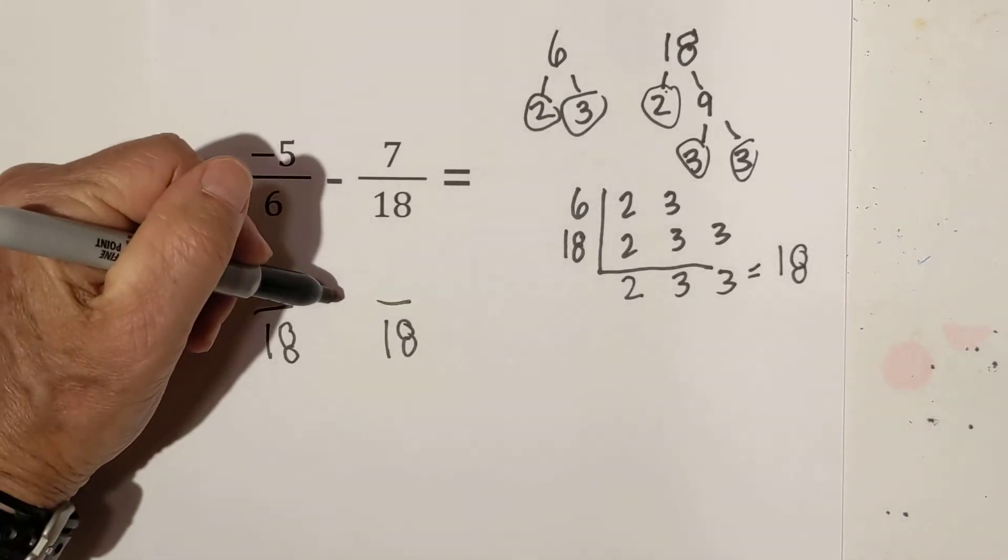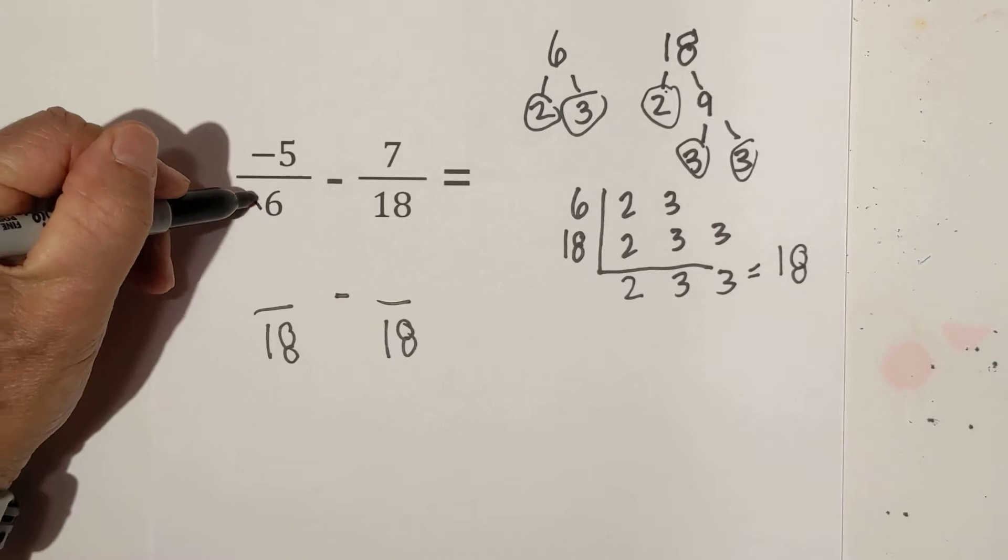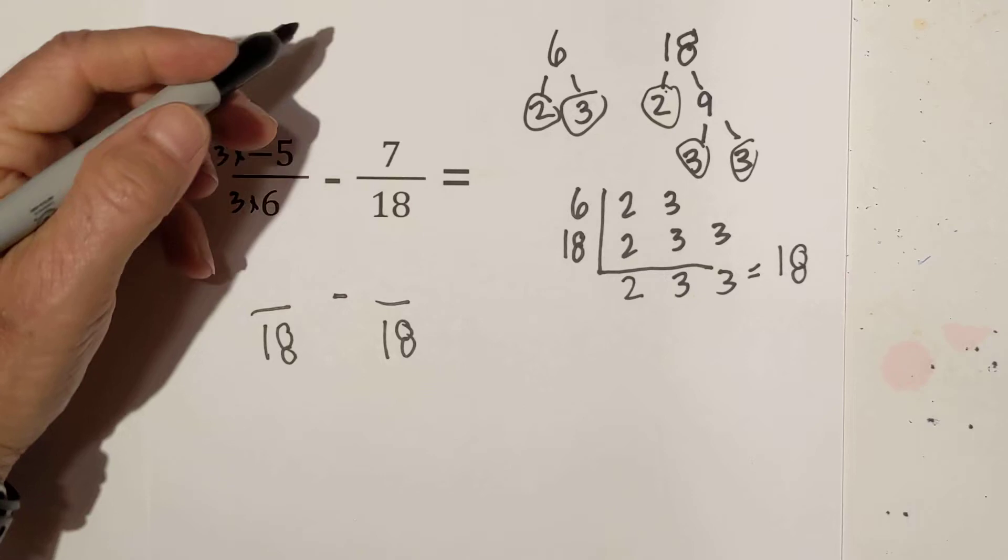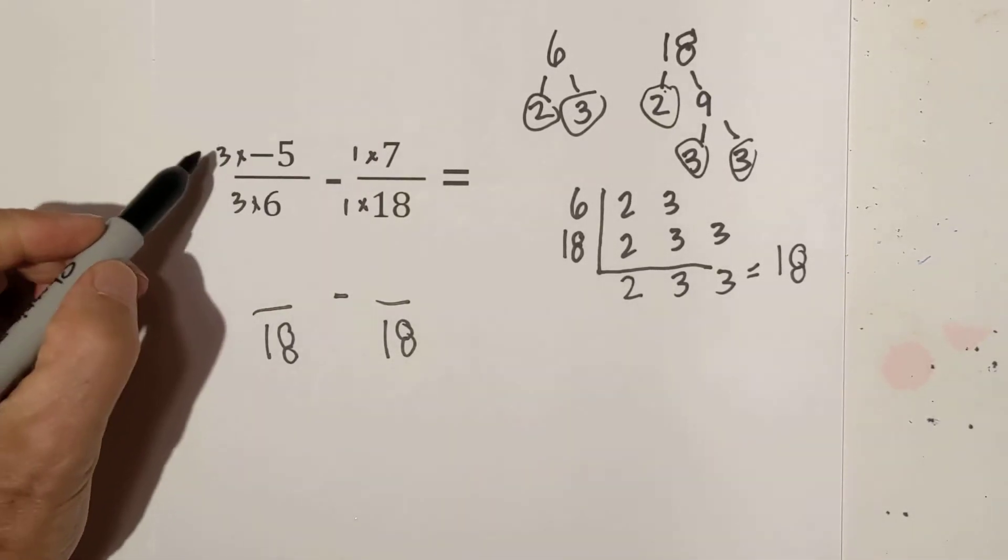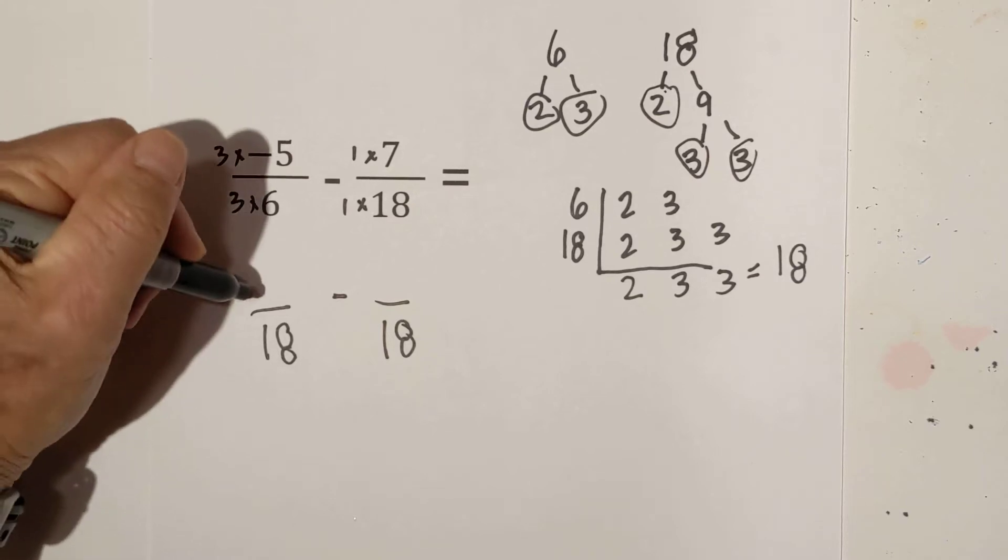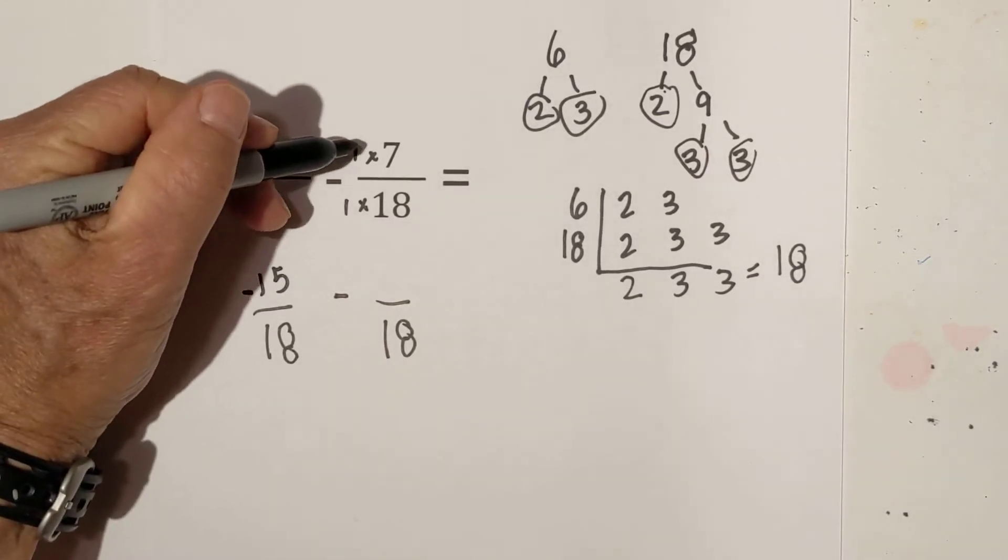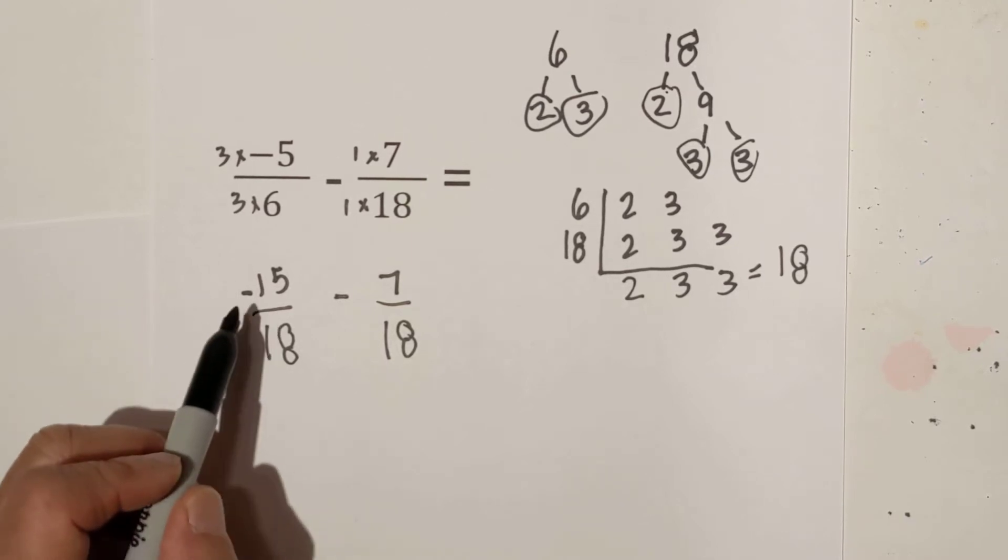Now let's remember the signs. We have a negative here. 6 goes into 18 3 times. So we will multiply both of these by 3. And 18 goes into 18 obviously 1 time. 3 times a negative 5 is a negative 15. And 1 times 7 is 7.